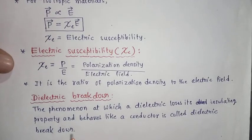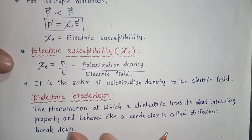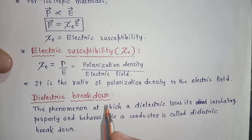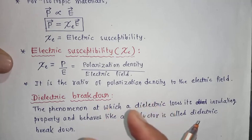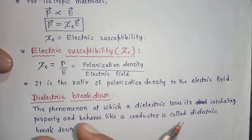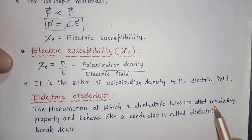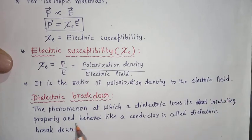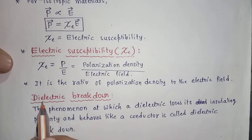For example, air is also a dielectric. At very high electric field or high potential difference and low pressure, air becomes a conductor — that means it will start conducting electricity. It loses its insulating property and now behaves like a conductor. This phenomenon is called dielectric breakdown.